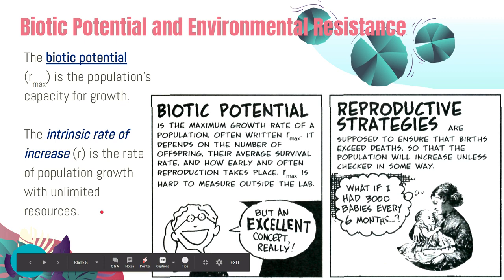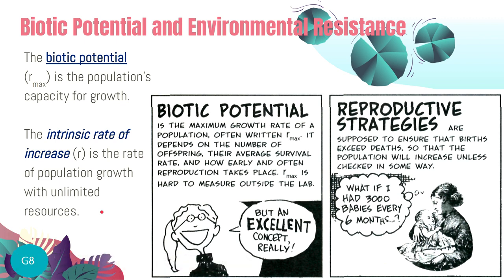Assuming that there is unlimited food, water, enough space, good conducive temperature — everything that an organism or a community would need — what is their rate of reproduction? How fast will they reproduce? That's biotic potential.